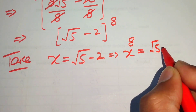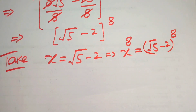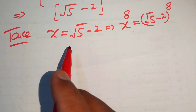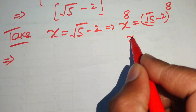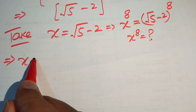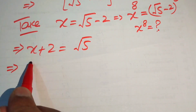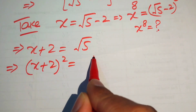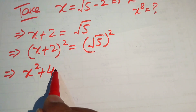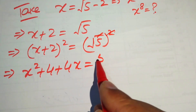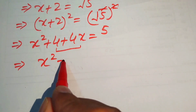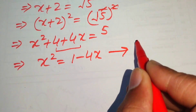We have x⁸ = (√5 − 2)⁸. Moving minus 2 to the left gives x + 2 = √5. Squaring both sides: (x + 2)² = 5. Expanding using the identity a² + 2ab + b²: x² + 4x + 4 = 5. Therefore x² = 1 − 4x, which we call equation number 1.